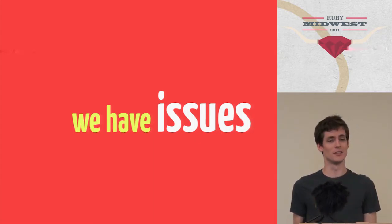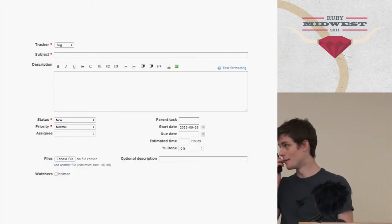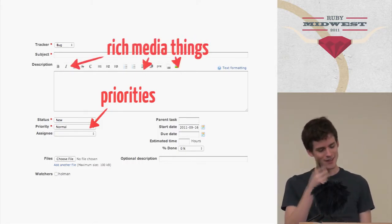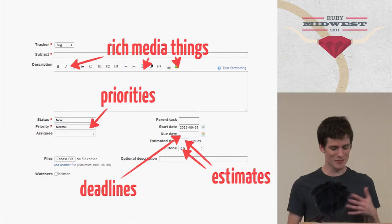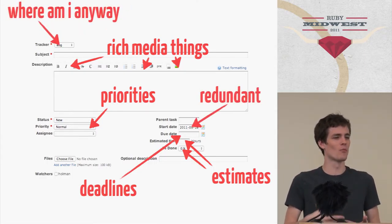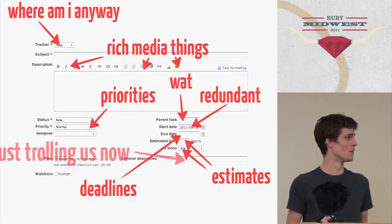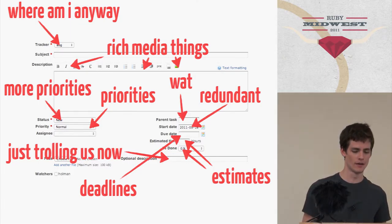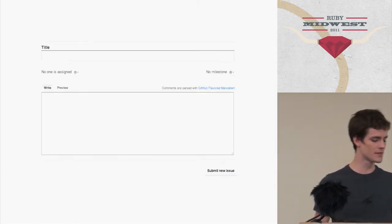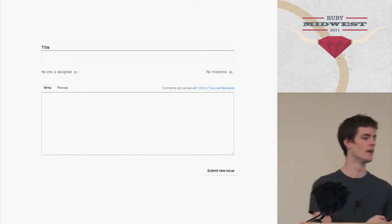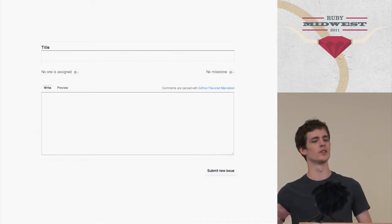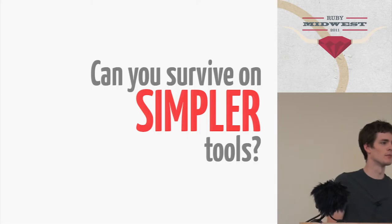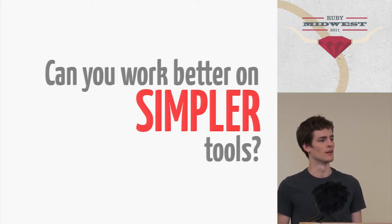I want to talk about issues. Everybody has issues in different companies — I'm talking about tickets, bugs, stuff like that. Everybody's seen a new issue create screen with a lot of stuff going on — some of it makes sense, but they just layer more and more stuff on there. Trying to figure out what is the point of all this, like duplicating priorities and such. The one we use on GitHub.com is just title and description — we do away with the whole bunch of priorities and craziness. Because for the most part you don't need them. Ask yourself: can you survive on simpler tools? Can you work better and faster on simpler tools? I think you can.